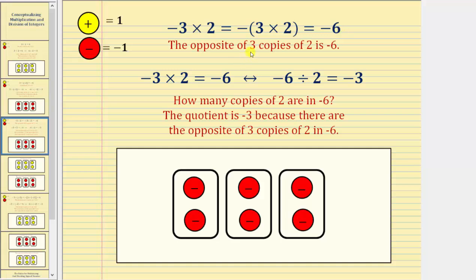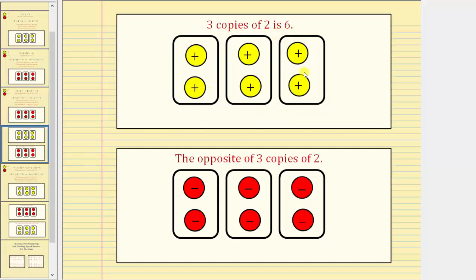To model this product, let's first review 3 copies of 2. We saw earlier that 3 copies of 2 is positive 6, but we want the opposite of 3 copies of 2. Therefore we take this model and change the sign of the chips — or flip them over — which gives us 6 negative chips. Here's a model for the opposite of 3 copies of 2.